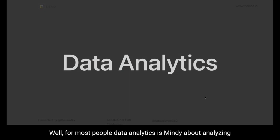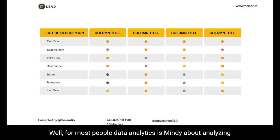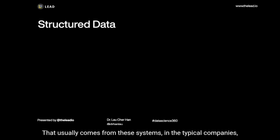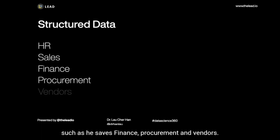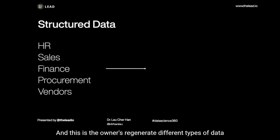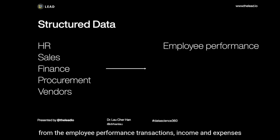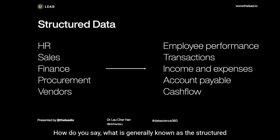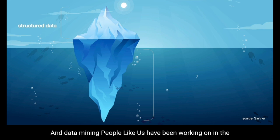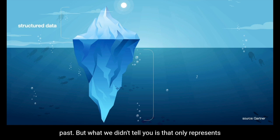What is the first thing that came to your mind when we talk about data analytics? For most people, data analytics is mainly about analyzing structured data which typically contains rows and columns. The data usually comes from systems in typical companies such as HR, sales, finance, procurement, and vendors. These systems generate different types of data from employee performance, transactions, income and expenses, accounts payable, and cash flow. These are what is generally known as structured data, and that's what data analysts and data mining people have been working on in the past.